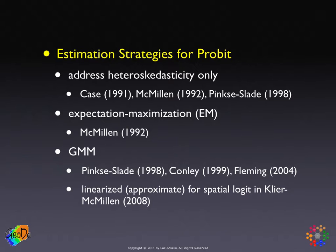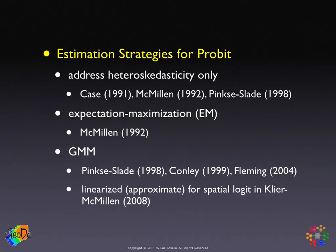There is a slightly different approach, which is another approximation applied to the logit model. I mentioned earlier that a spatial logit has a very tenuous interpretation and is not as natural as a probit because it doesn't have the normal distribution, and it's not clear what the multivariate distribution is for the logit. But there is a bit of a literature on it. Clear and Macmillan use a linear approximation of the GMM conditions around the value of the parameter at zero. This method works when there is weak spatial autocorrelation but doesn't work well when the autocorrelation is strong.